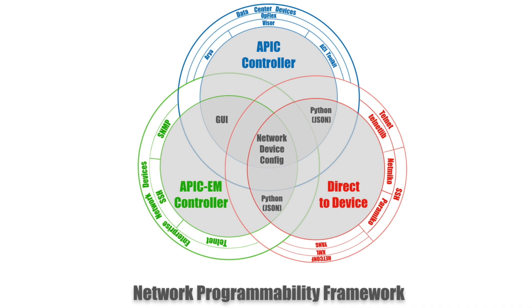And there are three basic ways that we can do this. We could use a controller where we write a program that talks to the controller, and then the controller reaches out and does the configuration on those devices. Cisco has a couple of main controllers: the APIC controller that we typically find in a data center, and the APIC-EM controller that we typically find in the enterprise.